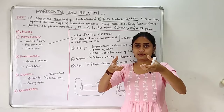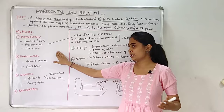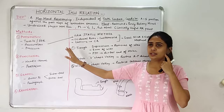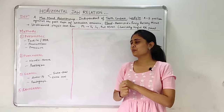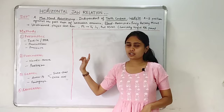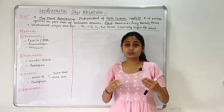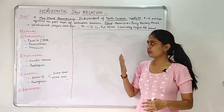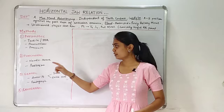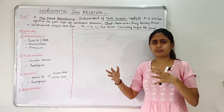We have completed the physiologic methods to record horizontal jaw relation: the tactile, the pressureless, and the pressure method. Moving on, we will go about with the functional method. As the name suggests, functional methods use the functional movements of the mandible to record our centric relation. In this, first we will see about the needle house method. In the needle house method, you just have to associate it with something very pointy or sharp.